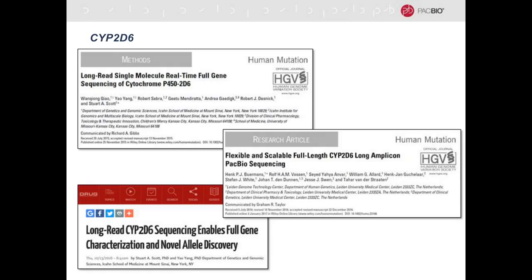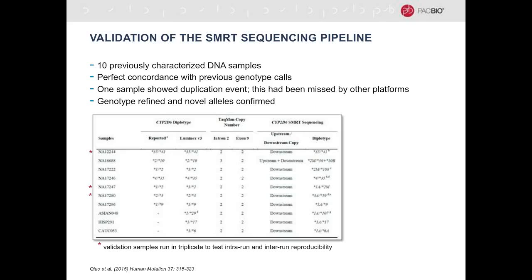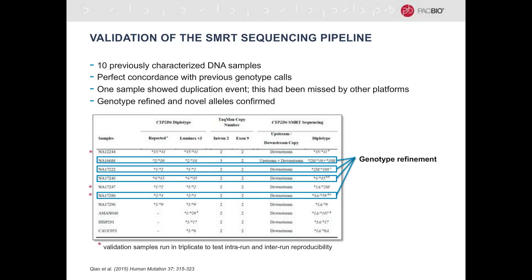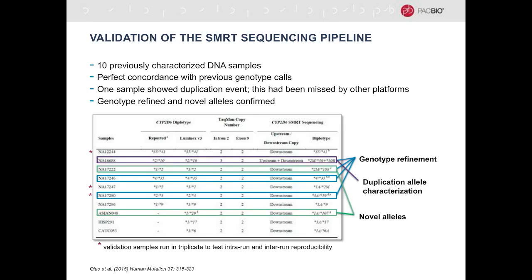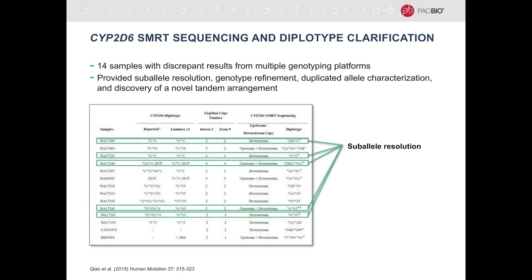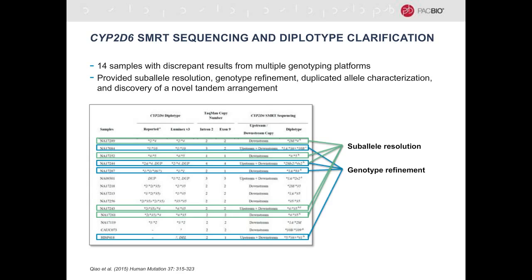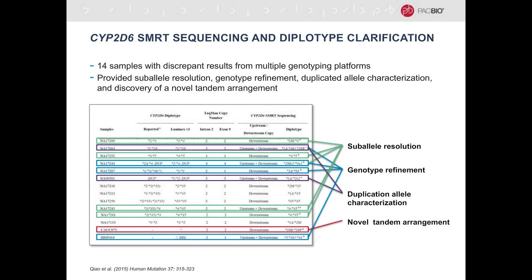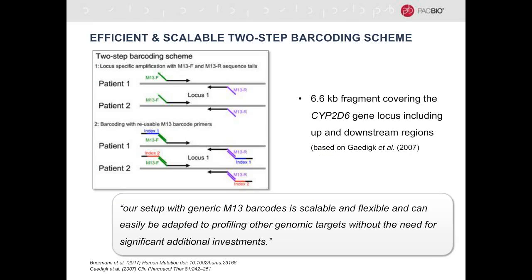In a series of two papers — first by researchers at Mount Sinai describing long-read single molecule real-time full gene sequencing of CYP2D6, and then more recently by a European group describing flexible and scalable full-length CYP2D6 amplicon sequencing — they describe how this NGS dead zone can now be fully and comprehensively interrogated. In the first paper, Stuart Scott and colleagues looked at 10 previously characterized samples and compared them to the SMRT sequencing assay. In several cases, SMRT sequencing refined the genotype, characterized duplication alleles, and found novel alleles missed by other assays. In 14 samples with discrepant results between genotyping platforms, SMRT sequencing resolved suballeles, refined genotypes, found allele duplications, and in one case found a completely novel tandem rearrangement never seen before.